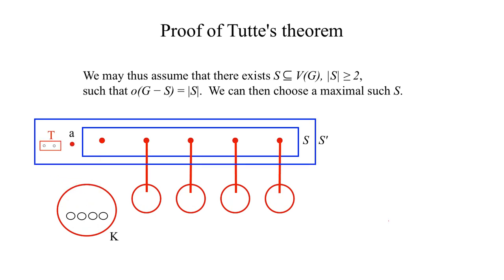Let S prime be the set formed by S plus T plus A. Then the number of odd components of G minus S prime is greater than or equal to the cardinality of S prime. This contradicts the maximality of S.